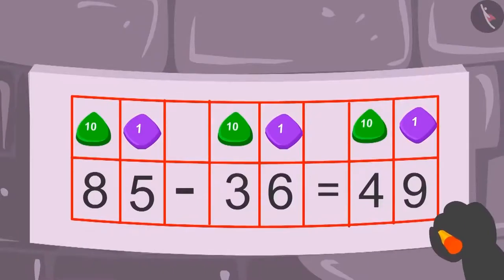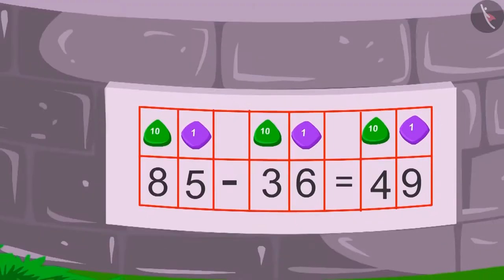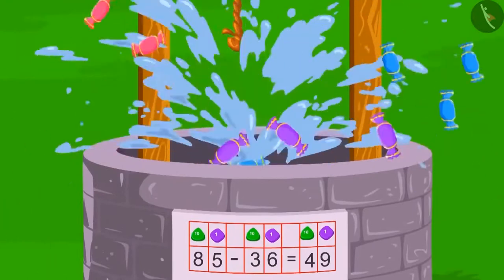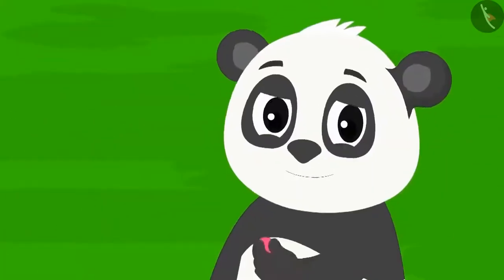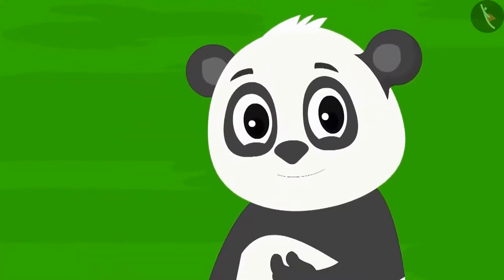Golu erased the wrong answer and wrote this correct answer on the well. As soon as Golu wrote the correct answer, a whole lot of toffees flowed out of the well. Golu ate a lot of toffees.